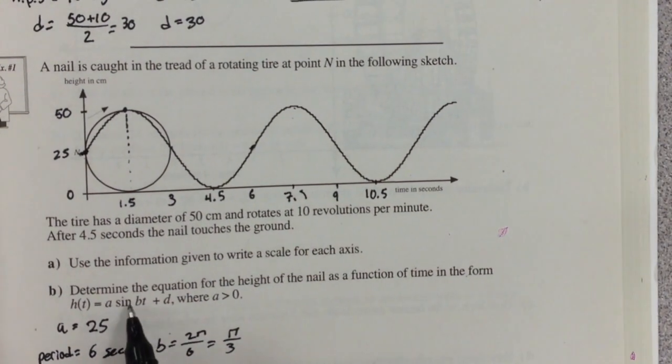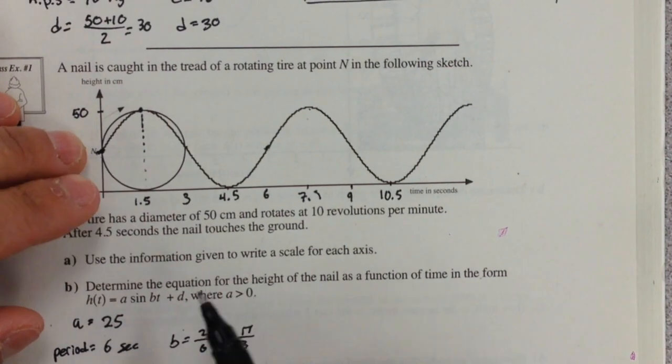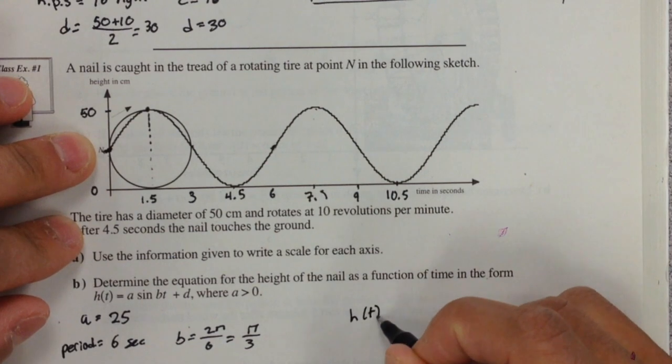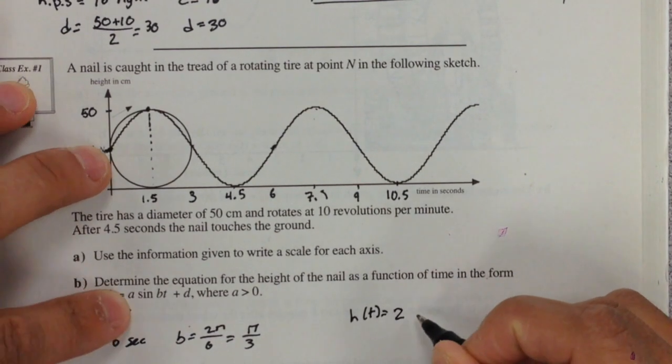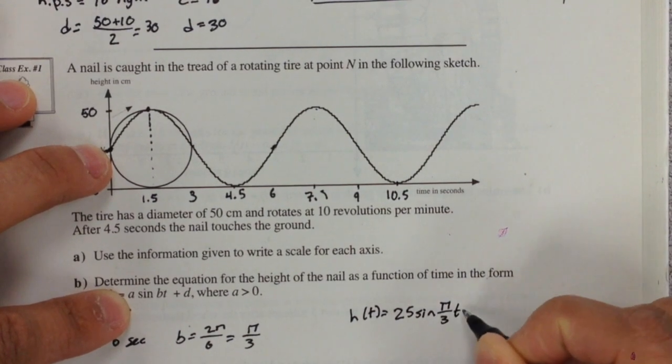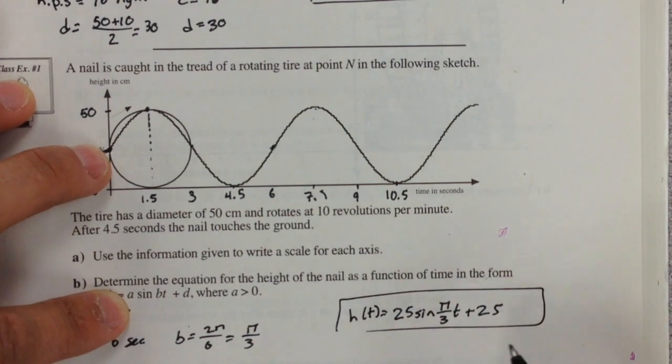If this is a sine function, then we're starting at our midpoint, which means that our vertical displacement is going to be 25. According to our function, we don't have a horizontal frame shift. So my equation is going to be h(t) = 25 sine π over 3 t plus 25.